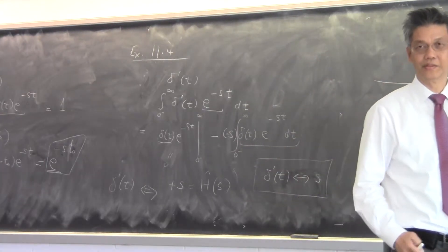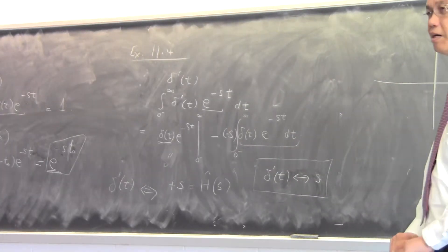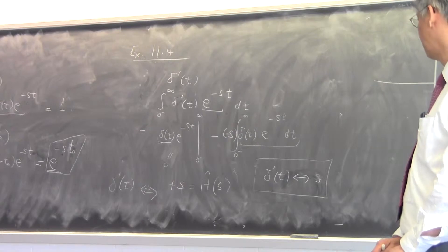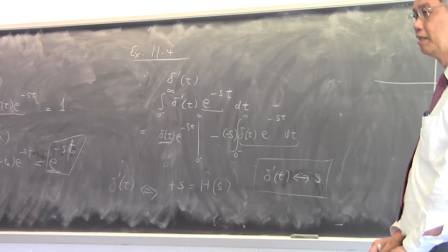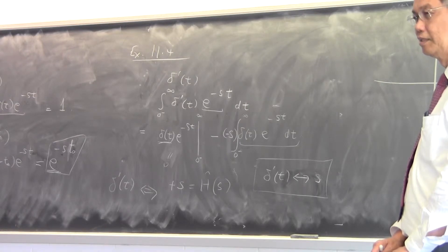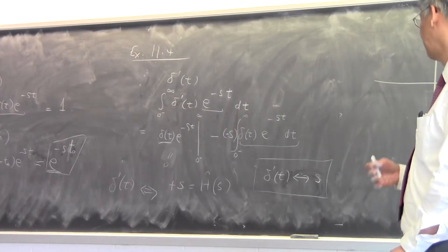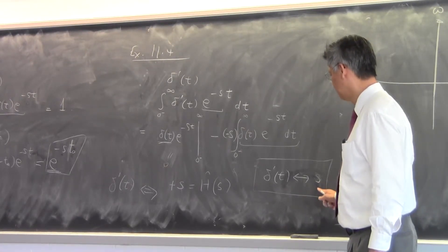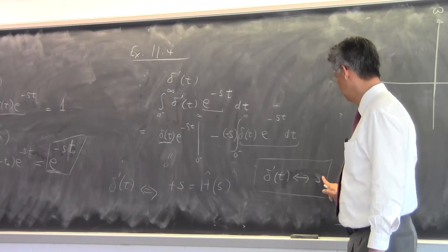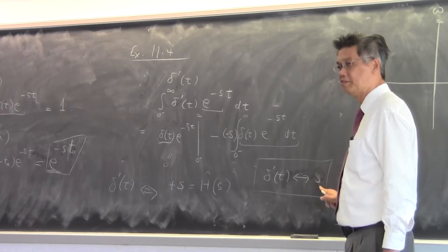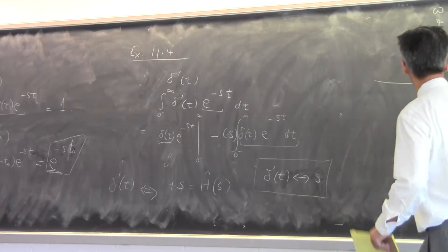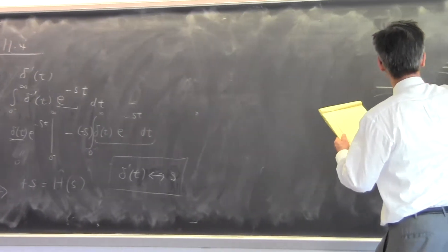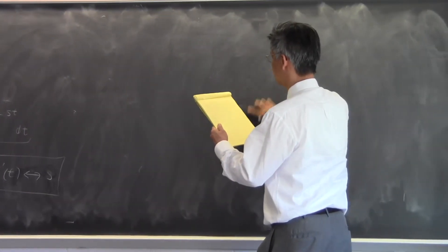This result has no pole on the finite part of the complex plane, so the region of convergence is everywhere on the finite complex plane. However, you can also take the viewpoint that it goes to infinity when s goes to infinity — meaning it has a pole at infinity. This becomes very important when you do stability analysis.